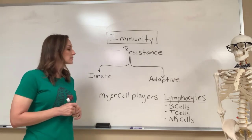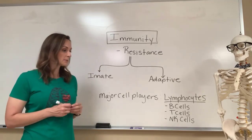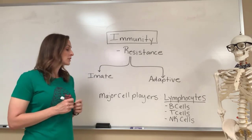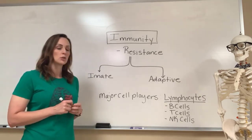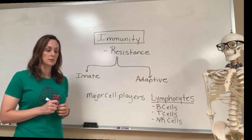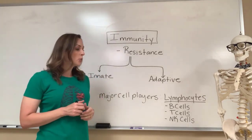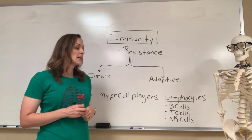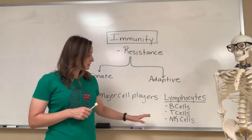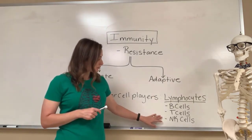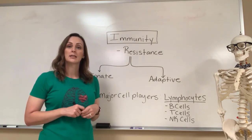Lymphocyte production happens in places like bone marrow, the thymus, and also the peripheral lymphoid tissues. Hemocytoblasts are the ones found in bone marrow, and they divide into two types of lymphoid stem cells. Group one is going to remain in the bone marrow and develop with the help of stromal cells — these produce the B cells and also the natural killer cells. B cells are going to differentiate with exposure to something called interleukin seven.